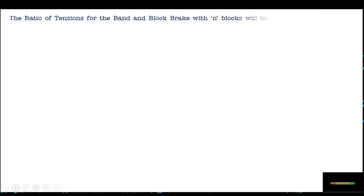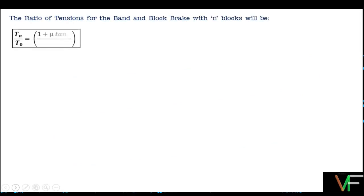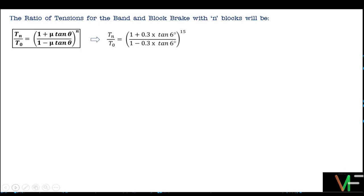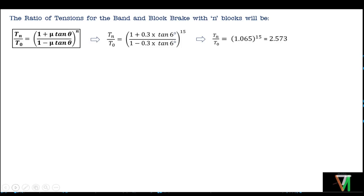The ratio of tensions for the band and block brake with N blocks is: Tn upon T0 equals (1 + mu·tan(theta)) divided by (1 - mu·tan(theta)), whole to the power of N. Substituting the values of mu, theta, and N, we have Tn upon T0 equal to (1 + 0.3·tan(6°)) divided by (1 - 0.3·tan(6°)) to the power of 15, which gives 1.065 to the power of 15, equal to 2.573.